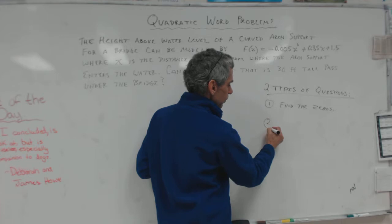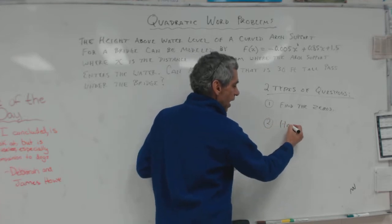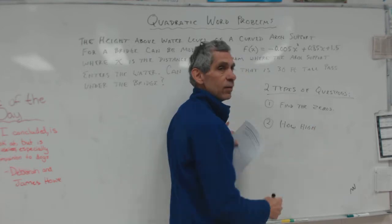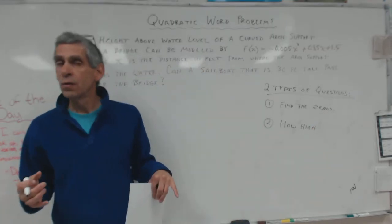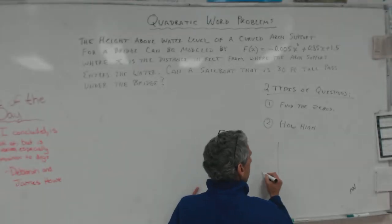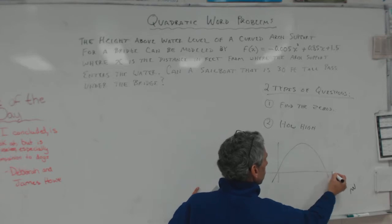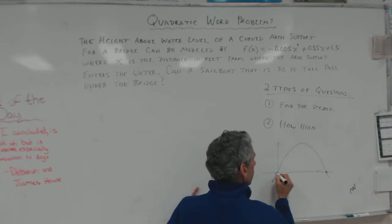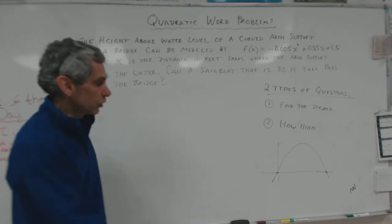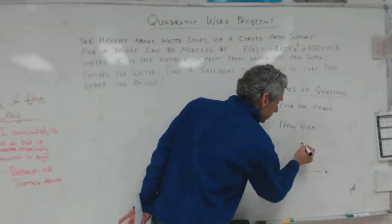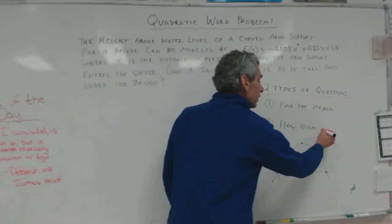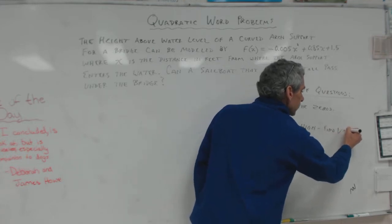It's not hard. You just set it equal to zero and either use the quadratic formula or factor out the greatest common factor. Do whatever you need to. You find an answer for t. That's the first type of question you can get. The second type of question you can get is how high? How high did the ball go? How high did the arrow go? What is that? If you have a parabola, here are the zeros. Where's the highest point? What's it called?